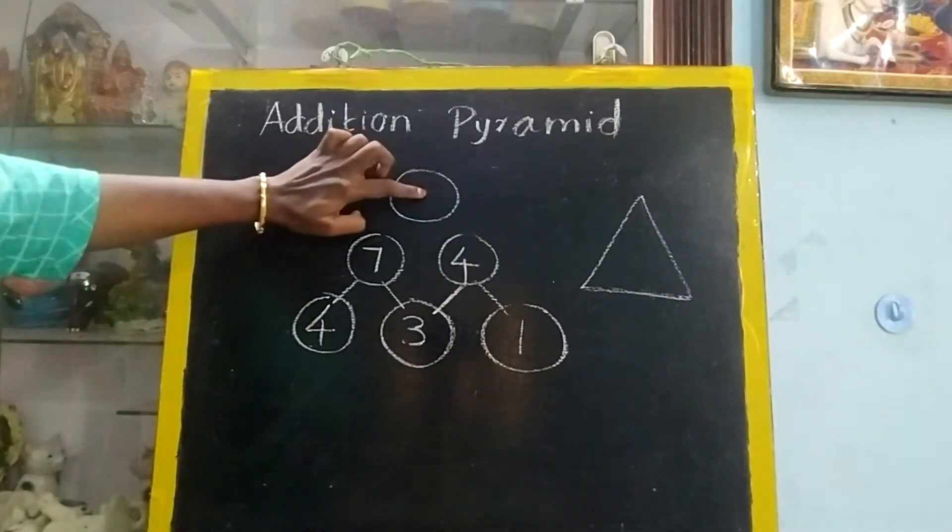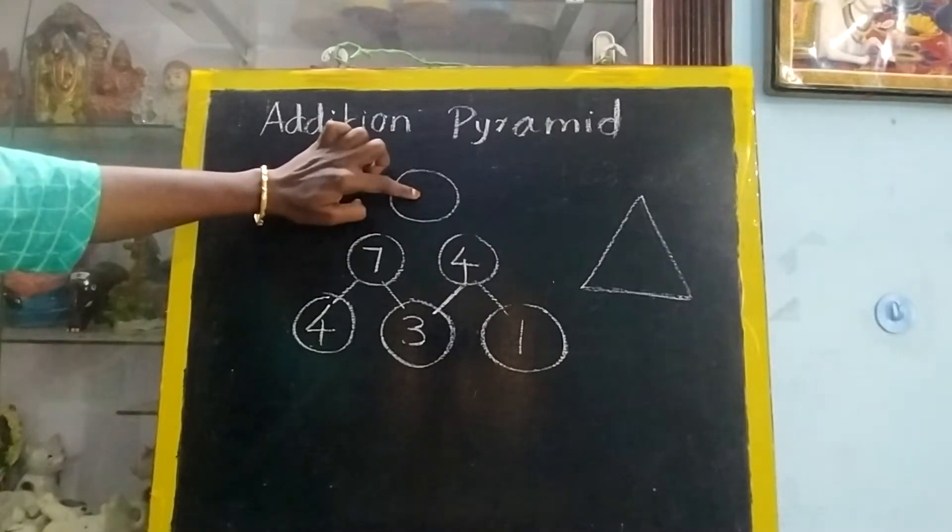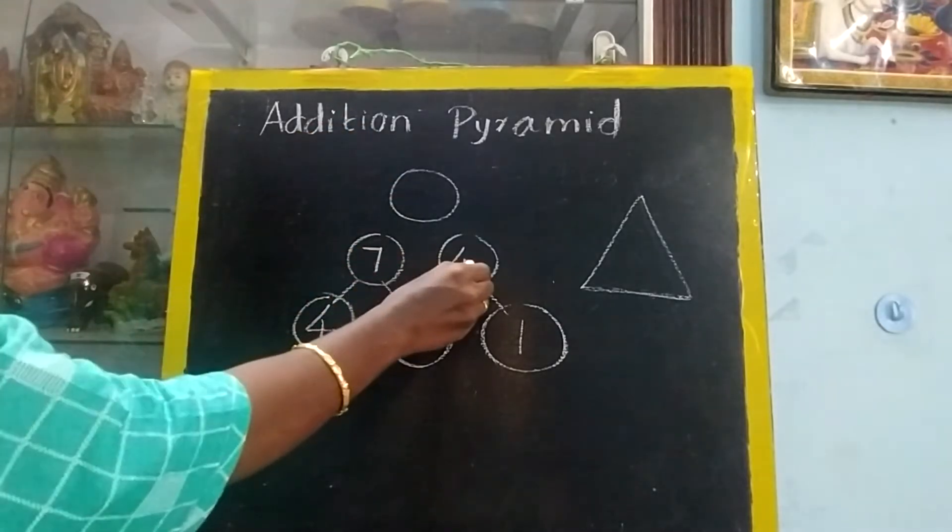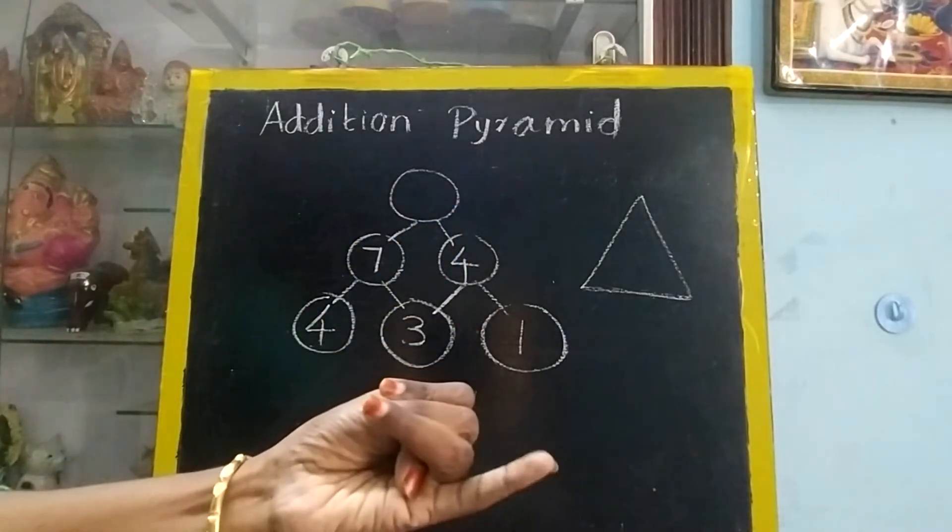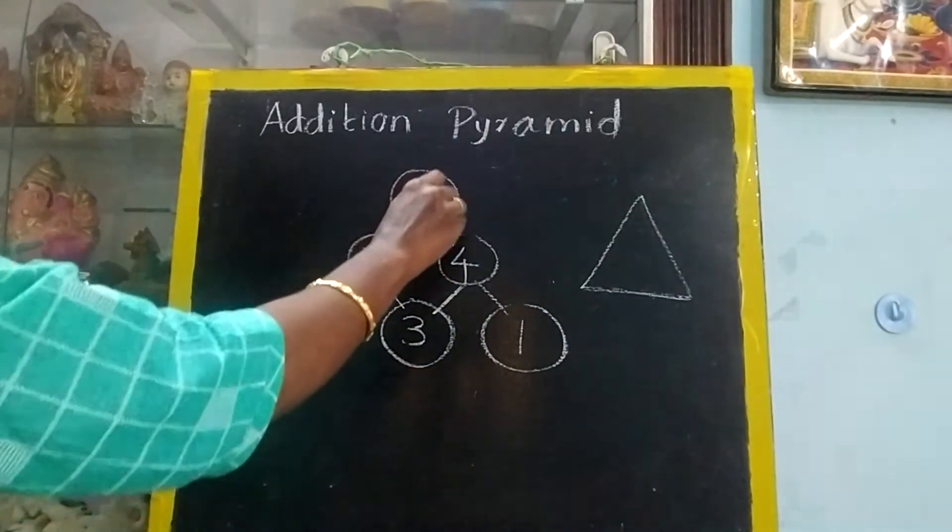Now, this is done. Now, can you guess which number you will add to get this answer? Yes. You have to add these two. 7 plus 4. After 7: 8, 9, 10, 11.